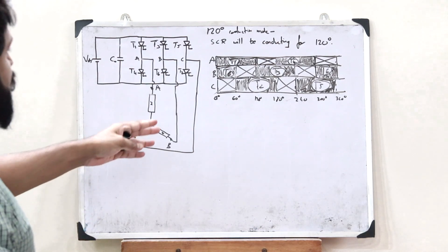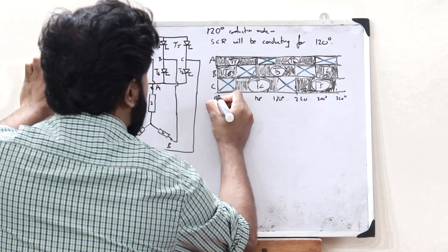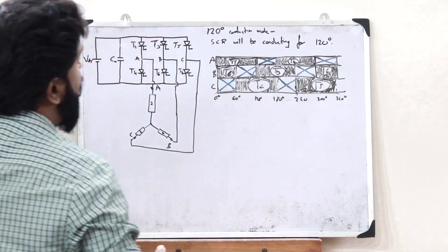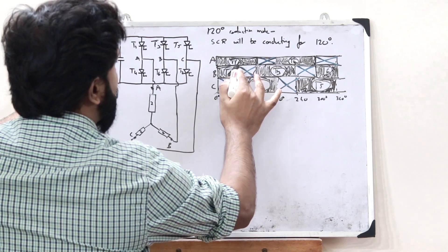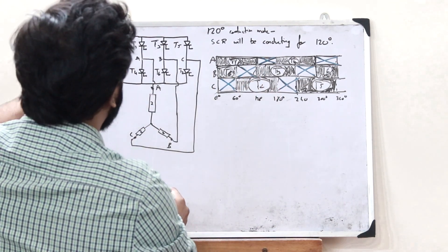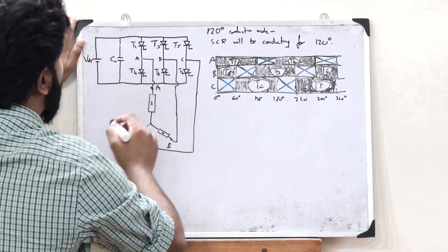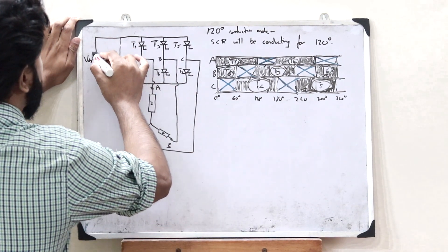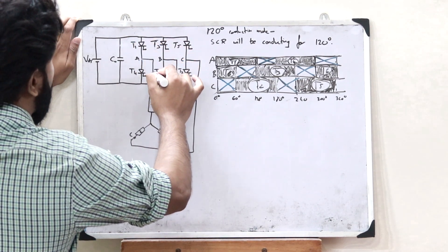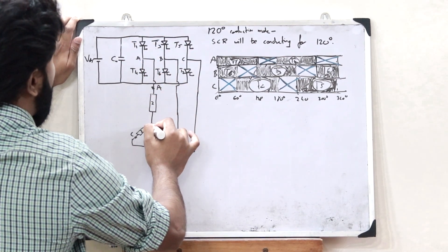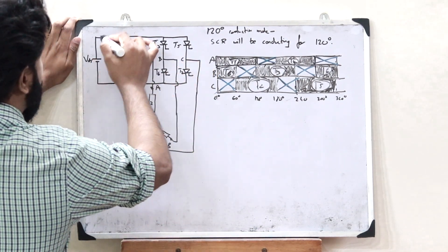Now let us see the first case — from angle 0 to 60 degrees. From 0 to 60 degrees, both switches T1 and T6 are turned on. When T1 and T6 are conducting, the current flows from the capacitor through T1, through the load, and completes the circuit back through T6.